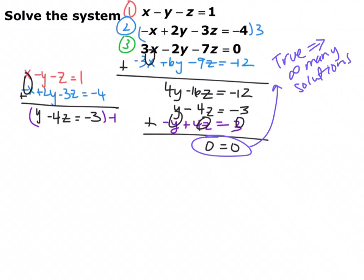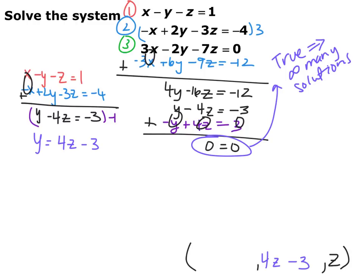The way we do this is to pick one variable to leave as a variable. I'm going to leave z as a variable. Every x, y, and z coordinate in my final answer will all have z in them — that's the pattern the infinitely many solutions hold. I'm going to write x and y in terms of z. From y minus 4z equals negative 3, solving for y gives y equals 4z minus 3. So no matter what z is, your y coordinate is 4 times that number minus 3. Instead of an actual value for y, I'll plug in 4z minus 3.